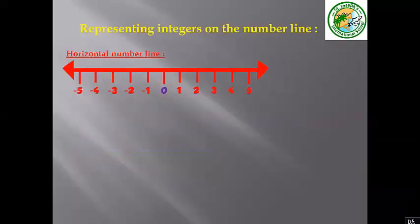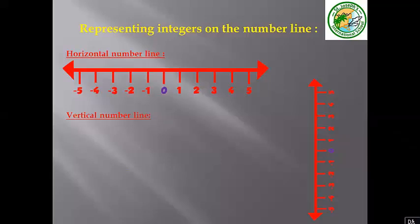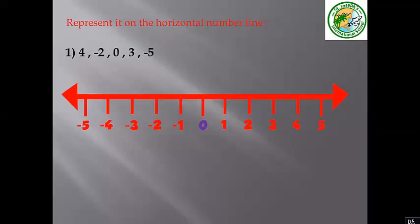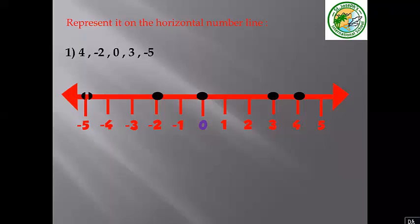Representing integers on the number line — we have two types: a horizontal number line, like a sleeping line, and a vertical number line, like a standing line. To represent on the horizontal number line, we place points for the given numbers: 4, negative 2, zero, 3, and negative 5. We put each point in its correct position, with negative numbers on the left of zero.